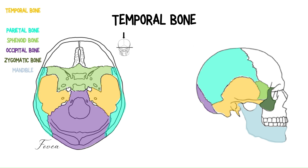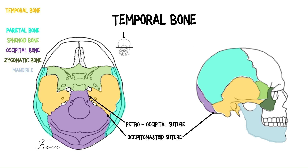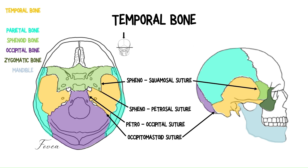The temporal bone has relationships with five different bones. With the occipital bone through the occipitomastoid suture and the petrooccipital suture. With the sphenoid at the level of the sphenosquamosal, which is formed by the articulation between the posterior border of the greater wing and the anterior border of the squamous part of the temporal bone. And the sphenopetrosal, which connects the greater wing with the petrous part of the temporal bone in the middle cranial fossa.